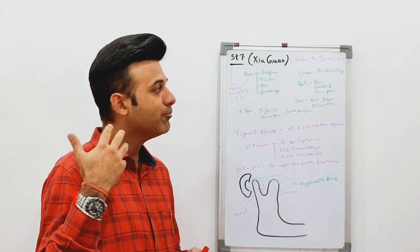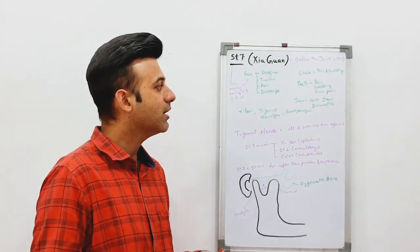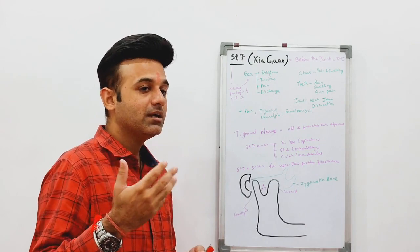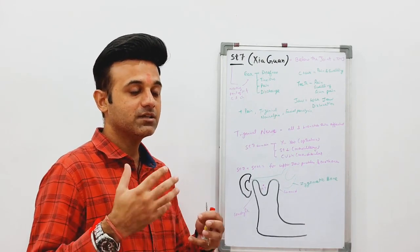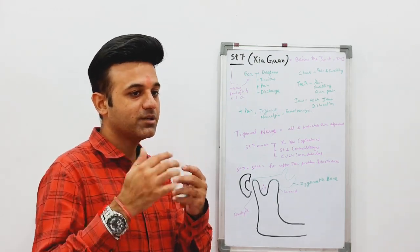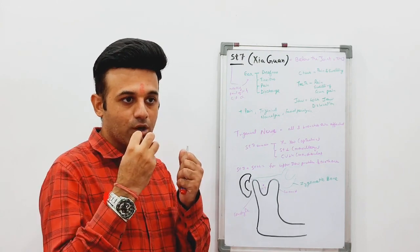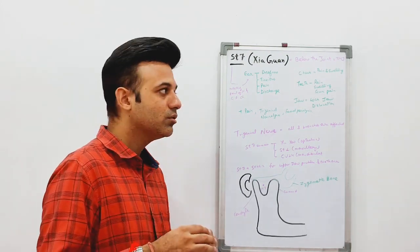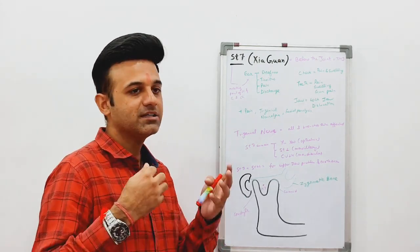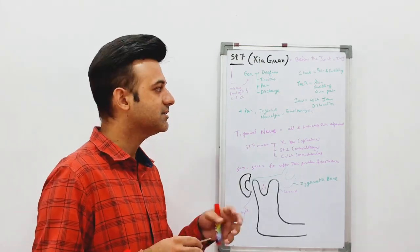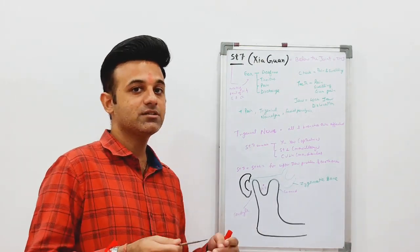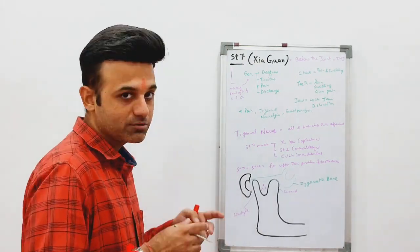Any pain, swelling, or numbness in the upper jaw area can be treated with Stomach 7. It is also very useful for temporomandibular joint problems, especially after fractures. In intermaxillary fixation, the jaws are locked for 20 to 30 days, and after the wires are removed, the patient is unable to move the jaws. Stomach 7 is an excellent point when the muscles become very stiff. It can also be used for trigeminal neuralgia and facial paralysis.